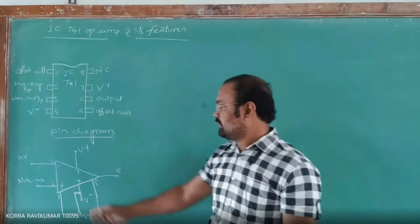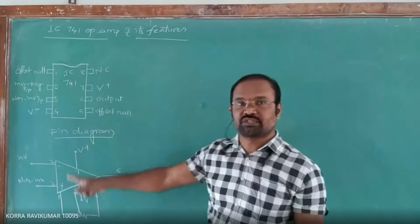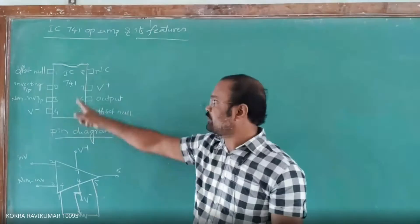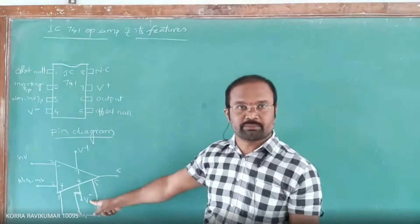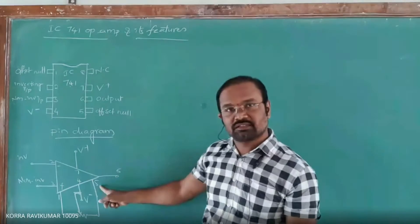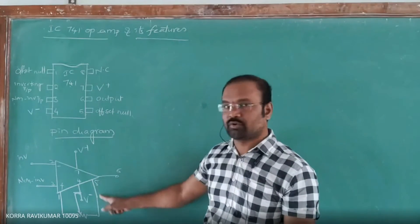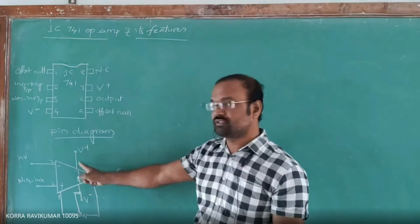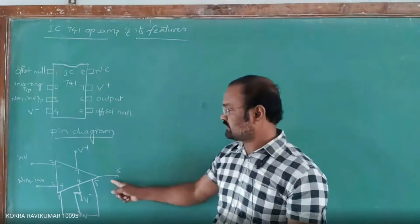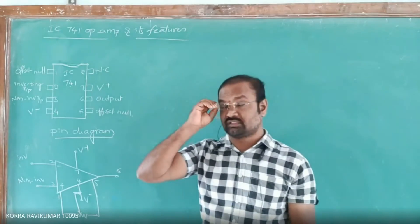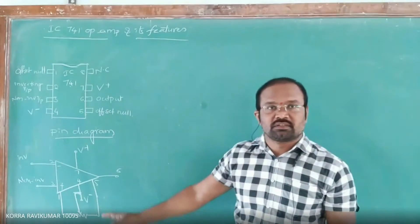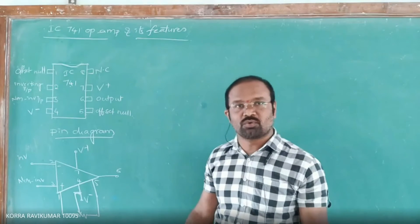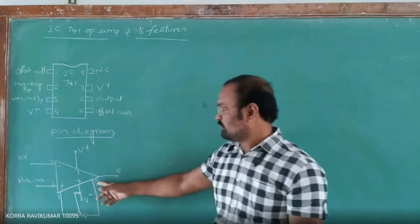Pin one is the offset null pin. Pin four is the negative power supply V minus. Pin five is the output offset null pin. Pin seven is the positive power supply. Pin six is the output pin where we take the output. Pin eight has no representation here as it has no role in the IC.